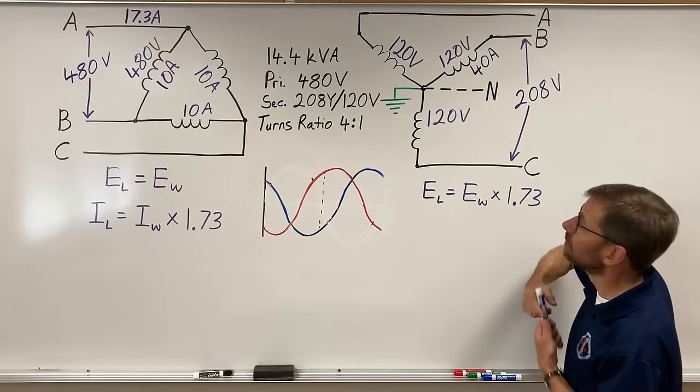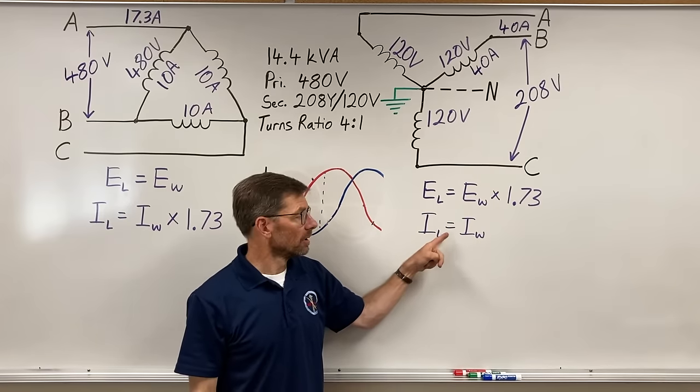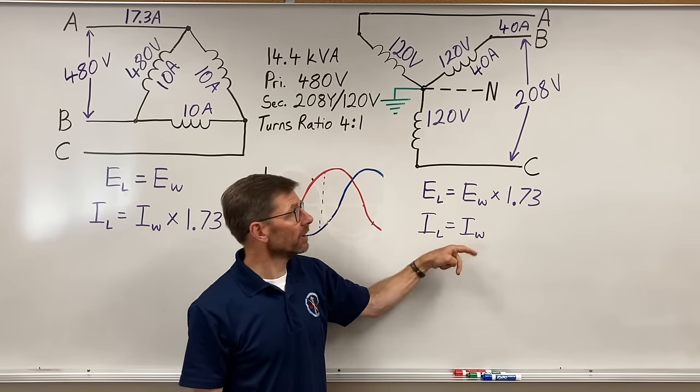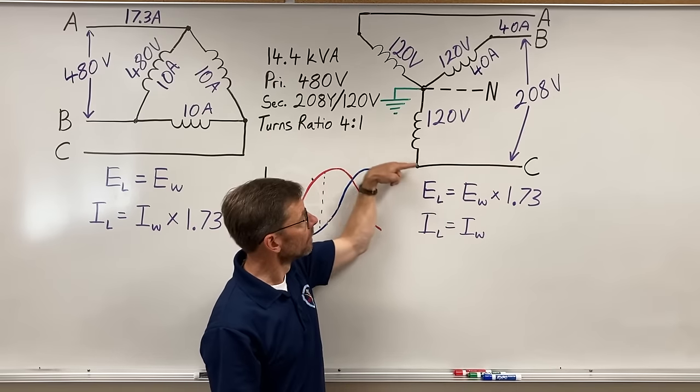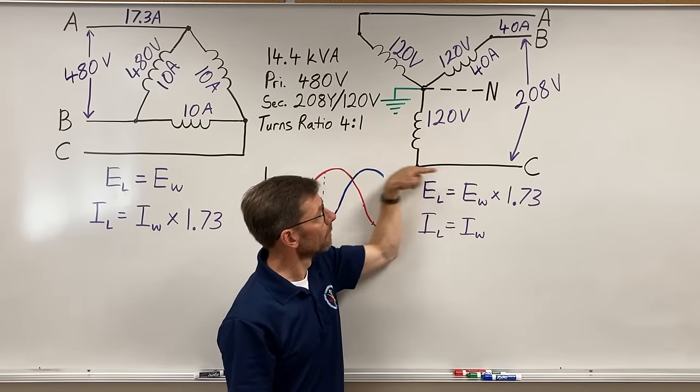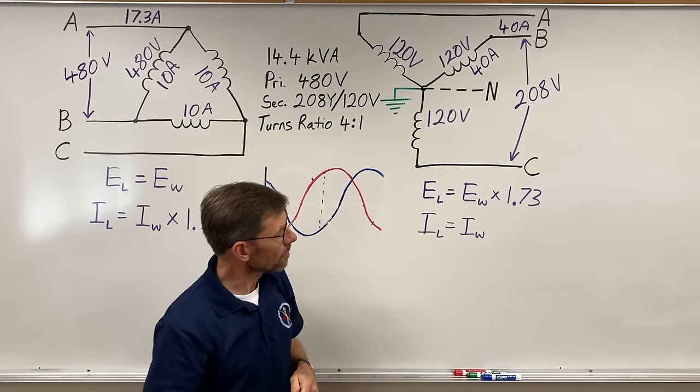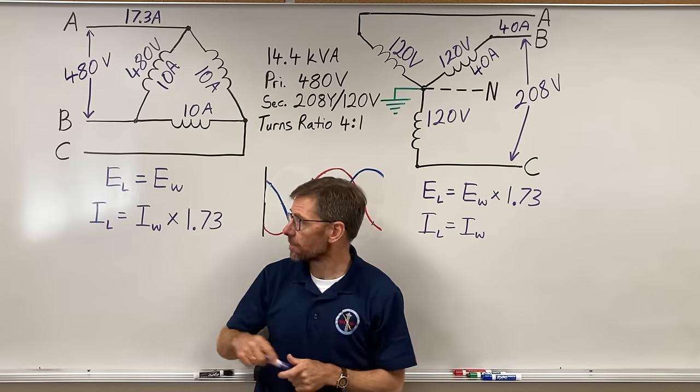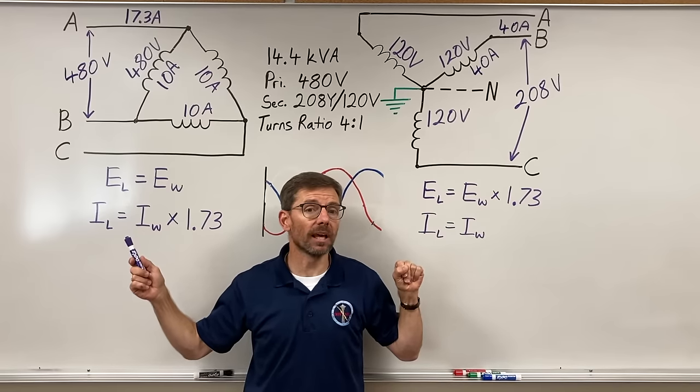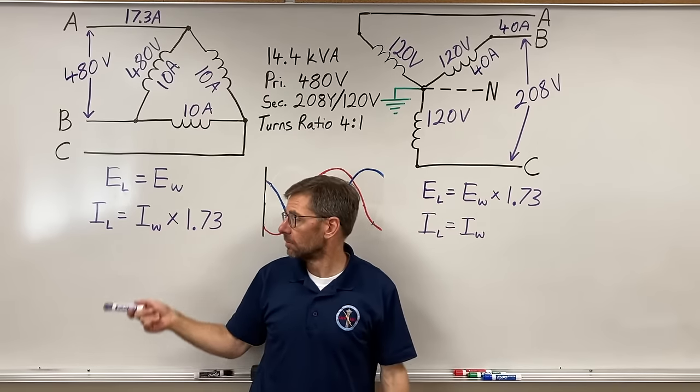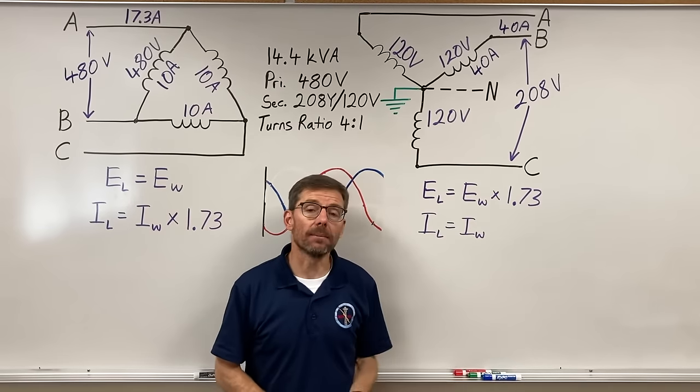So in the Y system, my line current equals my winding current. Whatever amps go through this winding, got to go down this line or back again. AC current flows both directions. So here are our relationships. Voltages are the same in delta. Different between the line and winding in a Y system. Amperages, line to winding, different in a delta. The same in a Y.